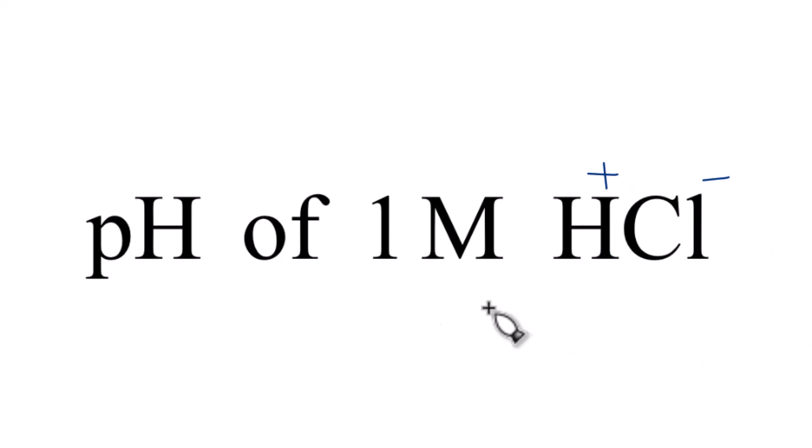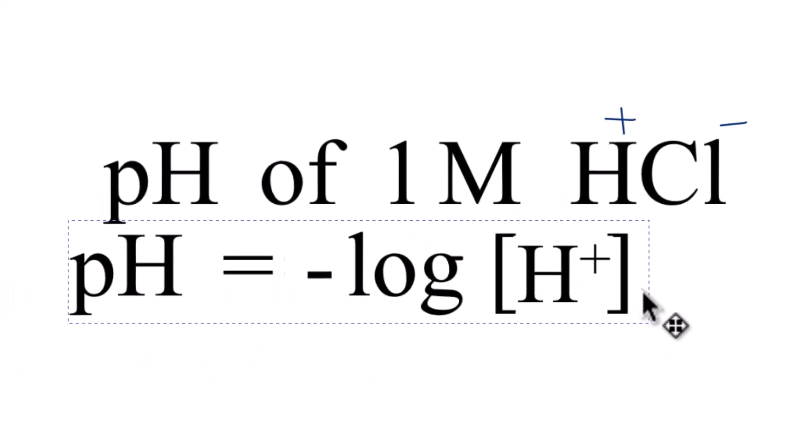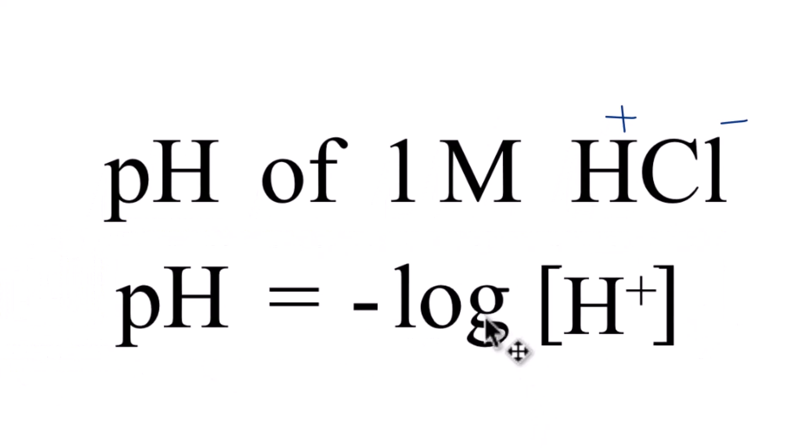To find the pH, we use this equation. pH equals the negative log of the concentration (those brackets) of the H+. This right here - that's the H in pH.